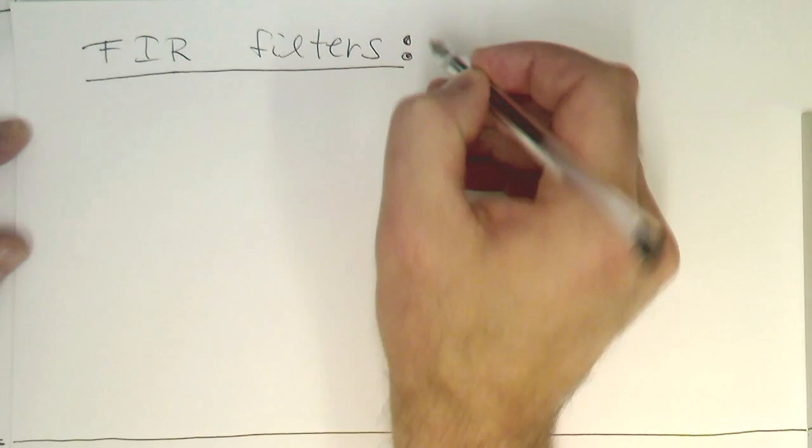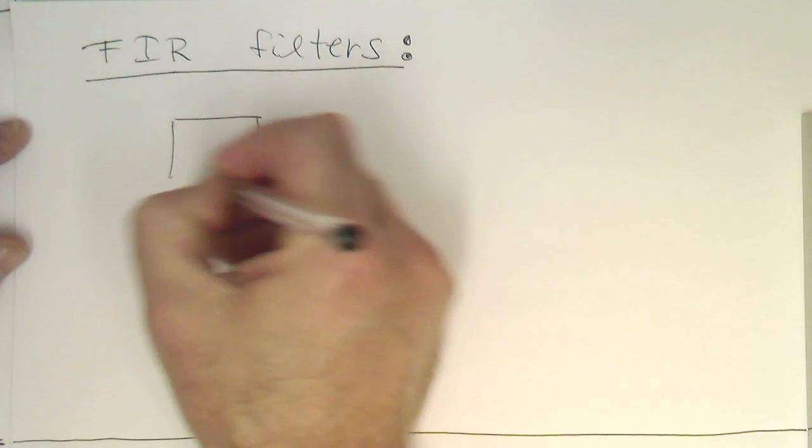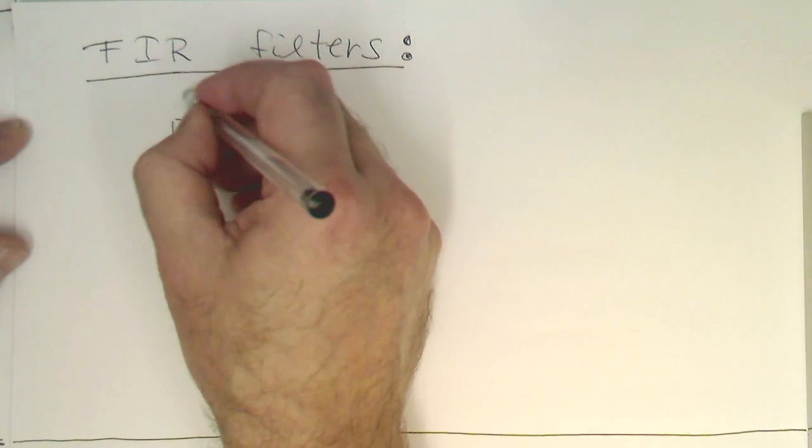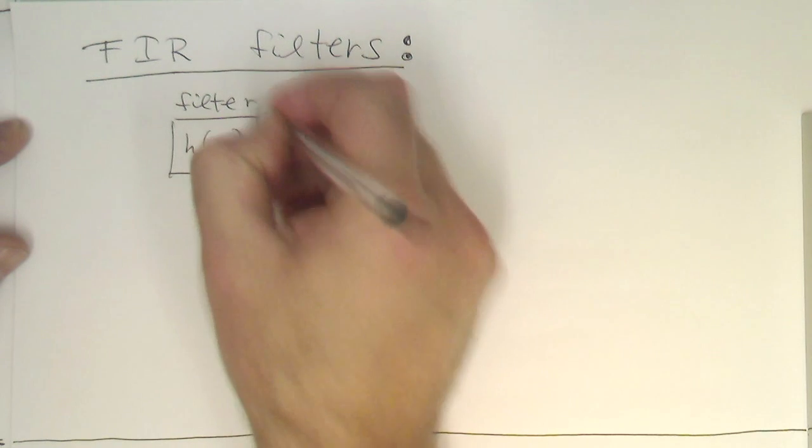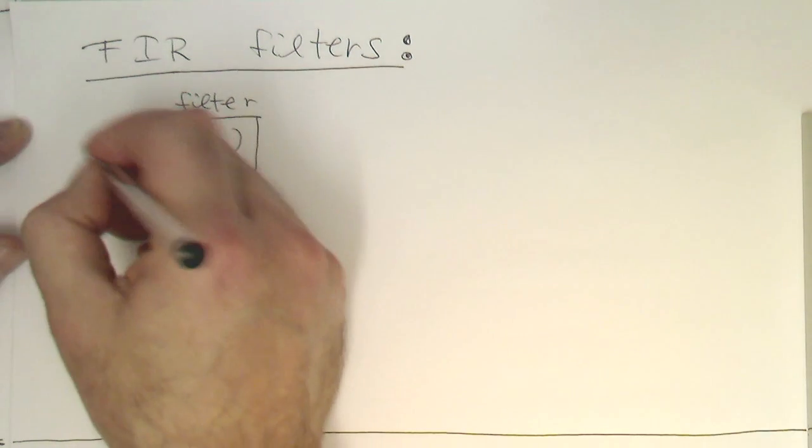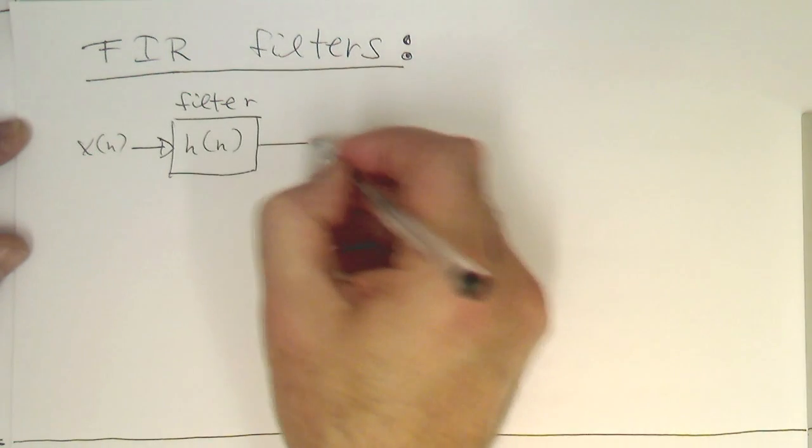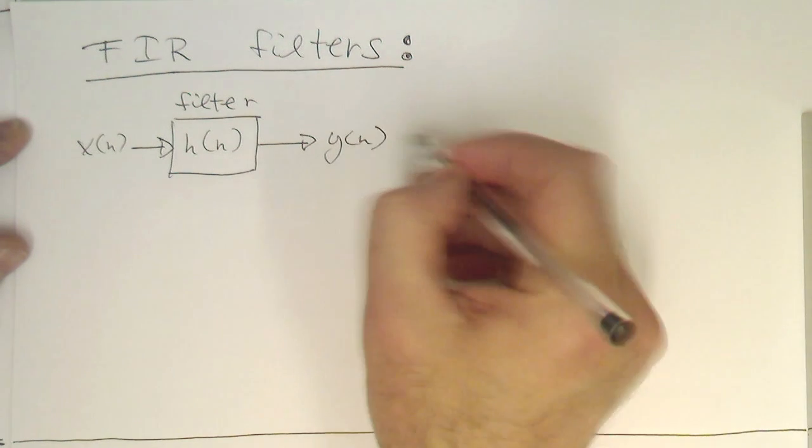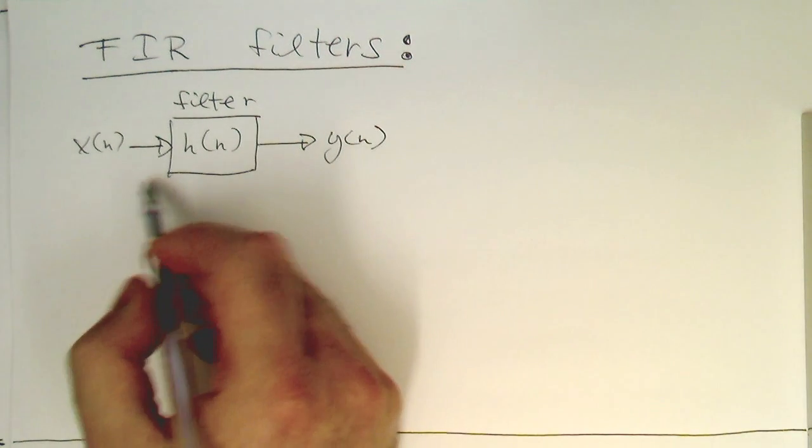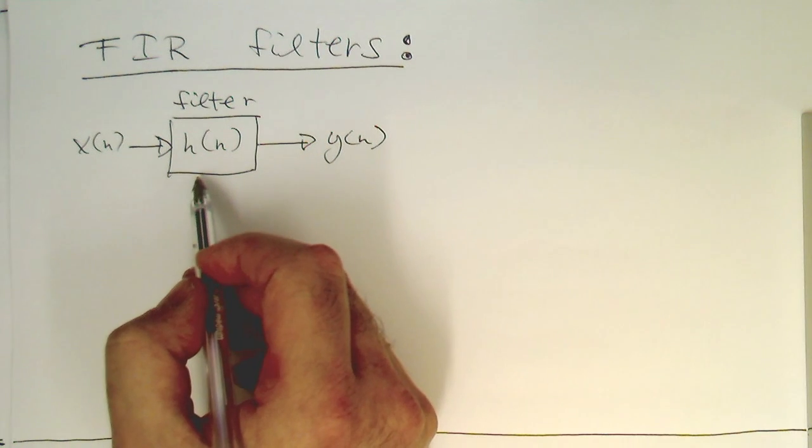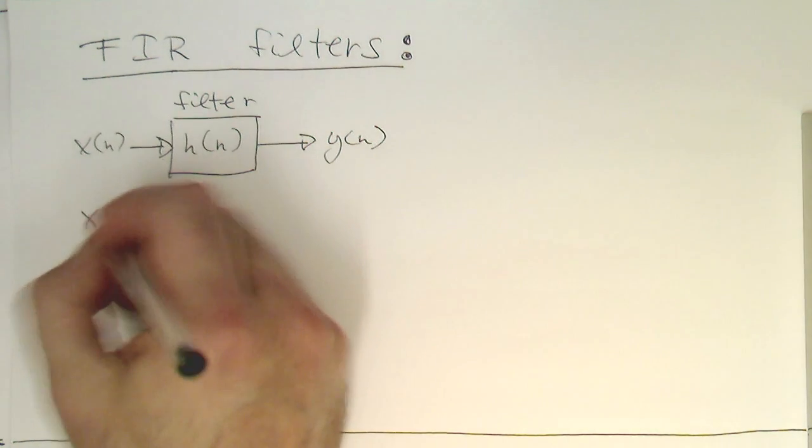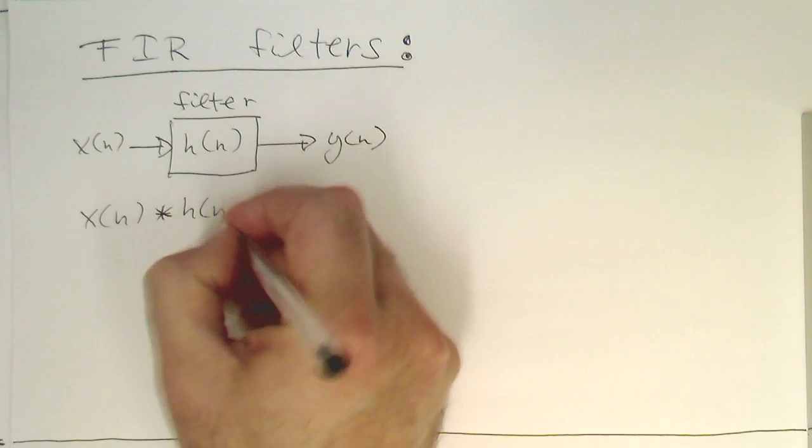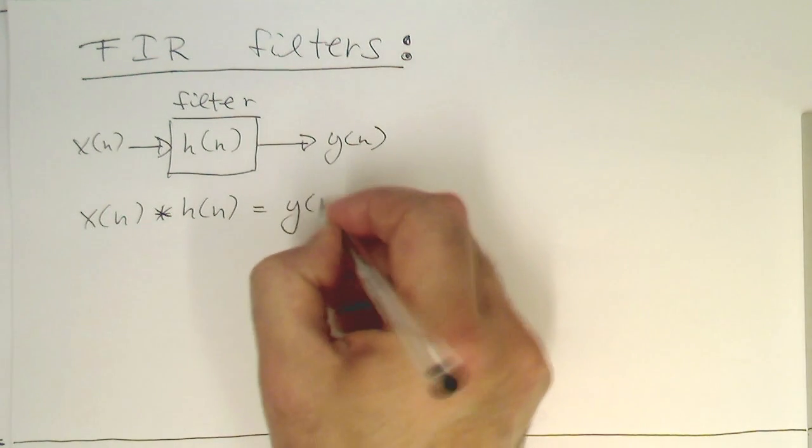Let's start again from our black box here. We've got our impulse response H(n), so that's our filter. We have X(n) as input and Y(n) at the output. This can be implemented with a convolution operation here in the sampled domain, so X(n) convolved with H(n) gives us Y(n).